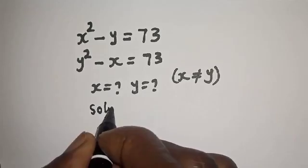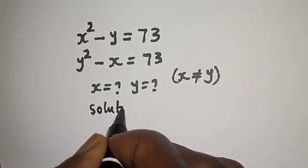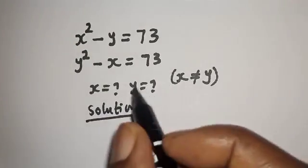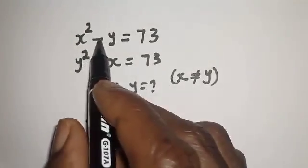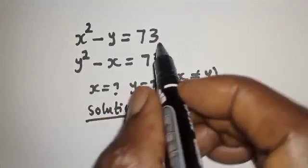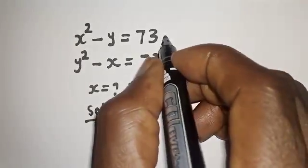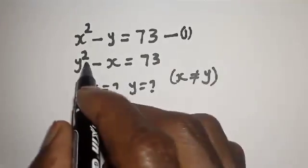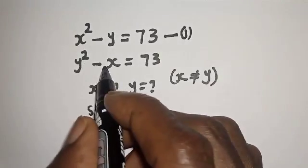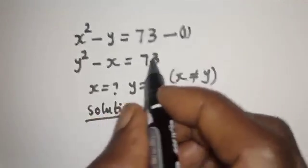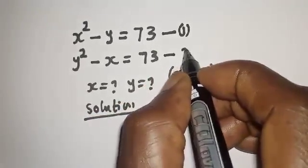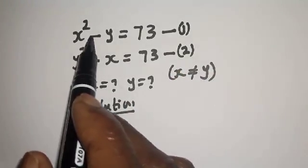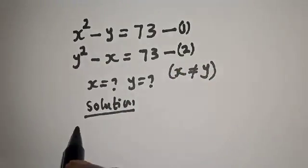Solution. S squared minus Y is equal to 73 — let's call this equation 1. Y squared minus S is equal to 73 — let's call this equation 2. Let's subtract equation 1 from equation 2.